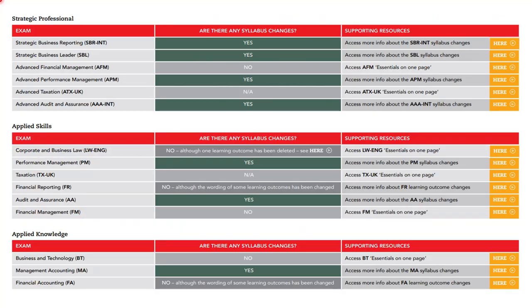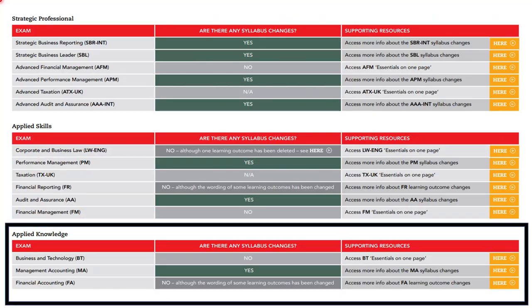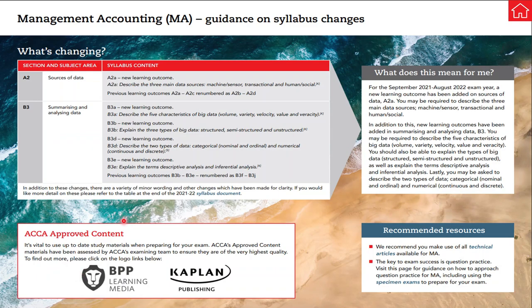First let us see what are the changes that are being made at the applied knowledge level. There is no change in the syllabus in Business and Technology exams and Financial Accounting exams. The only changes are being made in the Management Accounting exam. As you can see on the screen is the summary of syllabus changes that are being made in the Management Accounting MA exam.